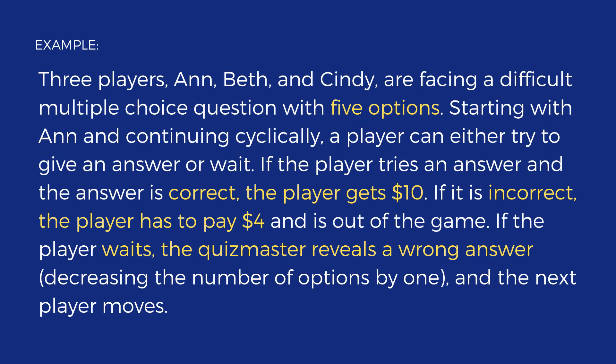Let us look at this example of a cooperative game situation called the Sequential Quiz Show. Three players — Ann, Beth, and Cindy — are facing a difficult multiple-choice question with five options. Starting with Ann and continuing cyclically, a player can either try to give an answer or wait. If the answer is correct, the player receives $10. If incorrect, the player pays $4 and is out of the game. If the player waits, the quiz master reveals a wrong answer, decreasing the options by one, and the next player moves.